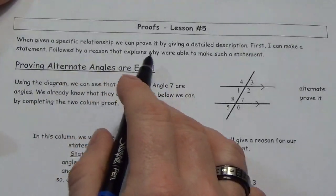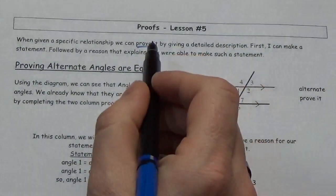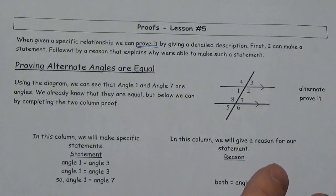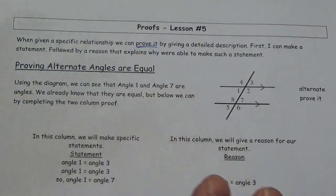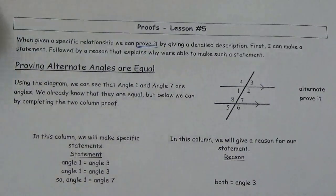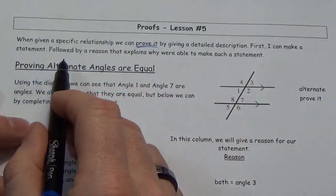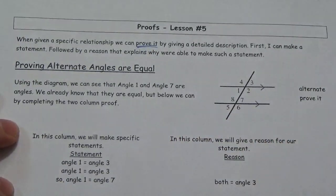When given a specific relationship, we can prove it by giving a detailed description. Whenever we prove something, it's always within a context — a context of certain things we're assuming are true. Everybody agrees that certain rules are true, and then we talk about what therefore follows as true. I can make a statement followed by a reason that explains why we're able to make such a statement.